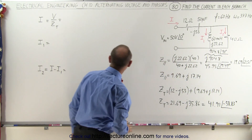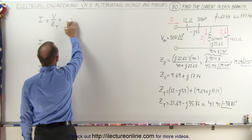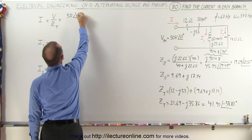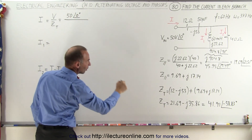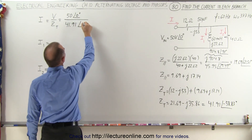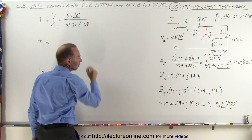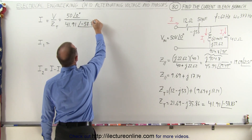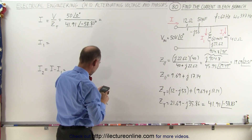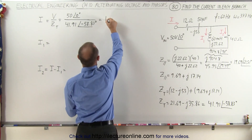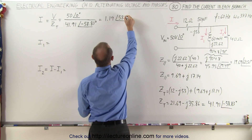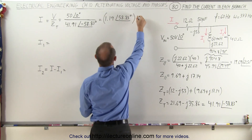Now that we have the total impedance, we can go ahead and find the current. The voltage is given as 50 with a phase angle of 0 degrees, divided by the total impedance, which is 41.91 with a phase angle of minus 58.83 degrees. This equals 50 divided by 41.91, which gives us 1.19 amps, with a phase angle of 58.83 degrees. That's the total current going into the circuit.